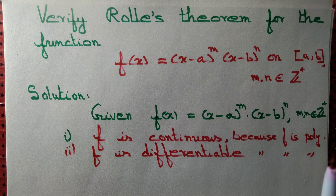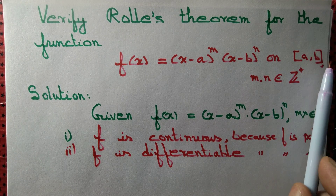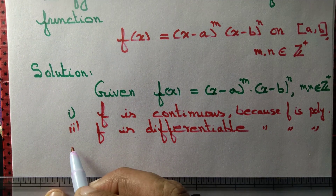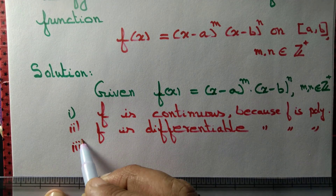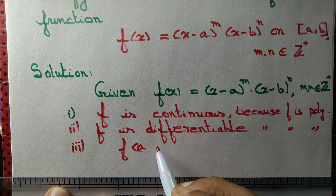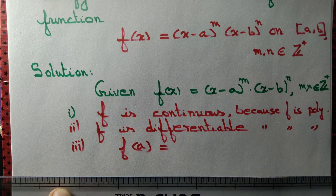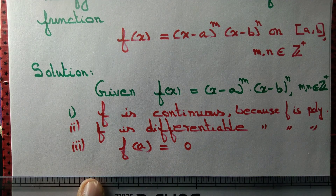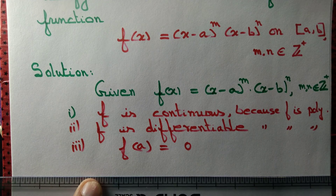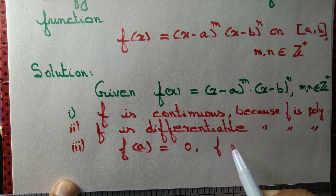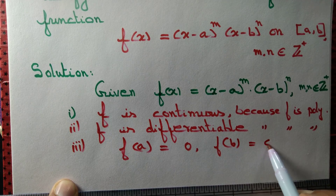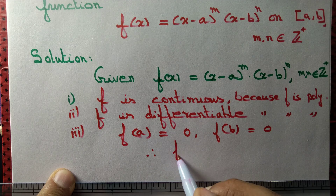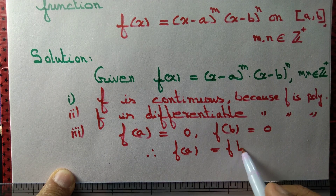Third point: we need to compute the value of the function at the endpoints a and b and make sure they are equal. f(a) equals 0 because (a minus a) is 0, and 0 to the power m is 0 as long as m is a positive integer. f(b) is also 0.